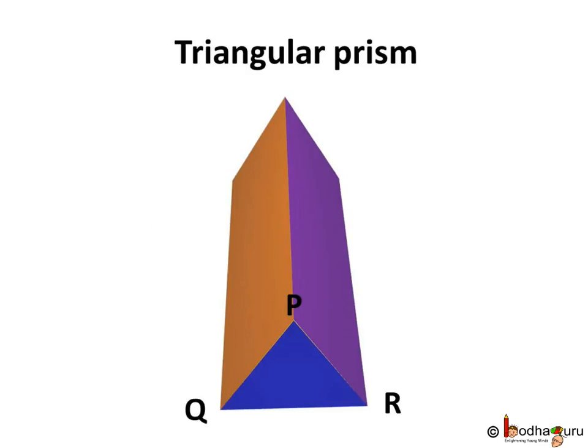Let us see. We take a glass prism. It has two triangular bases and three rectangular lateral surfaces. These surfaces are inclined to each other.